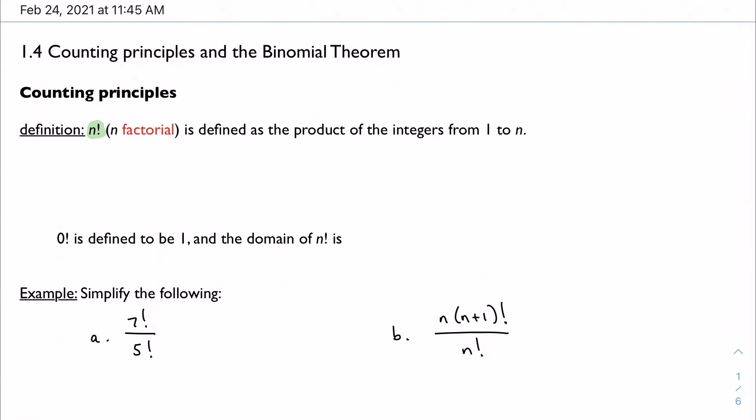It's defined as the product of the integers from 1 to n. So n factorial, we would say, typically we write it starting at n times n minus 1 times n minus 2, and so on, all the way down to 3 times 2 times 1. So for example, 5 factorial: 5 times 4 times 3 times 2 times 1, and we get 120.